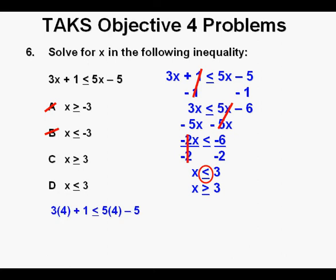Now we finish this problem up by checking our work. Let's substitute a number greater than 3, let's say 4, and use it to check the validity of our original inequality. 3 times 4 plus 1 is less than or equal to 5 times 4 minus 5. And that simplifies to 12 plus 1 is less than or equal to 20 minus 5.